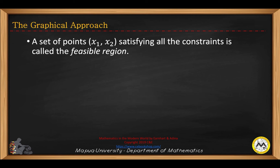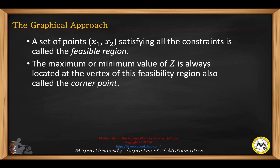Now let's have the graphical approach. A set of points x₁, x₂ satisfying all the constraints is called the feasible region. The maximum or minimum value of Z is always located at the vertex of this feasibility region, also called the corner point. The feasibility region is obtained by graphing all the inequalities and taking the solution that satisfies the system of inequalities.